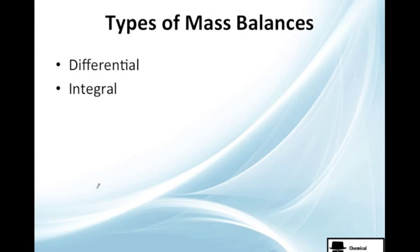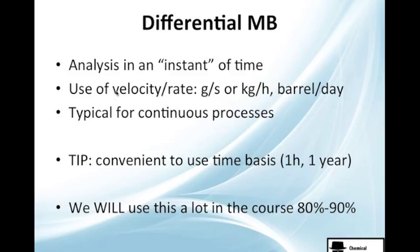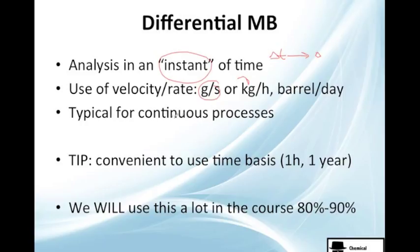We're going to see two different types of mass balance: differential and integral. Differential mass balance is essentially an analysis at one instant of time — as time goes to zero — so we're going to use velocities or rates, for example grams per second, kilograms per hour, or barrels per day. It is typical for continuous processes.